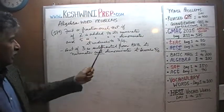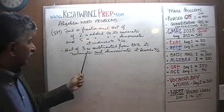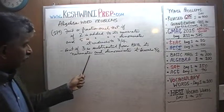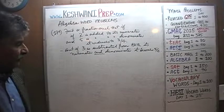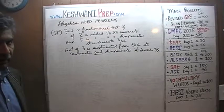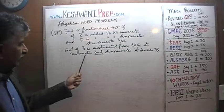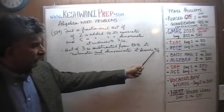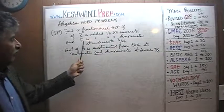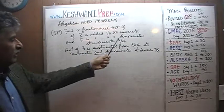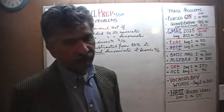It reduces to 3 quarters. But if 3 is subtracted from both its numerator and denominator, it becomes 5 sixths. So we have a fraction such that if you take away 3 from both the numerator and denominator it becomes 5 sixths, but if you add 2 to the numerator and 5 to the denominator it reduces to 3 quarters. The question is: what is that fraction?